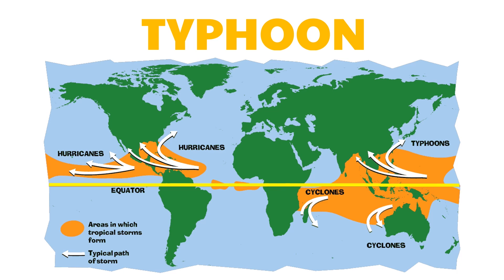Let's observe the path of these tropical storms. Notice that they never cross the equator, nor do they occur near it. Hurricanes and cyclones are born in waters at least eight degrees north or south of the equator. The rotation of the earth sends them off on a track that arcs away from the equator. This is because of the Coriolis effect.